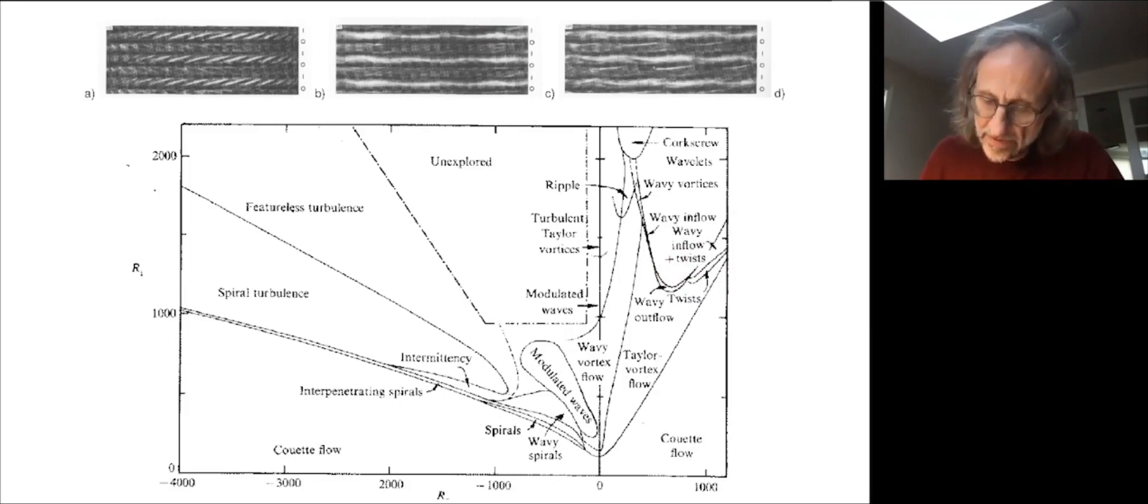And here they have wavelets. But you see that you really get many other states. You get modulated waves, turbulent vortices, ripples, modulated waves again, wavy vortices, intermittent states, spirals, interpenetrating spirals, wavy spirals. So the point is, you get these transitions at which a qualitative change occurs between one state and the other.